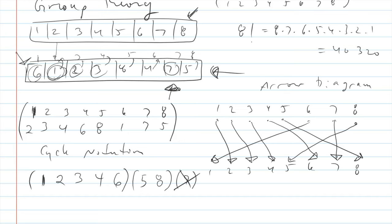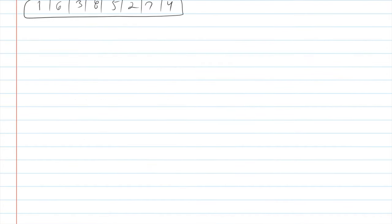We're not done yet because some numbers haven't been accounted for. Find the lowest number not yet used that isn't in its original position — that's 5. Start a second cycle: 5 is in position 8, so write 8. Then 8 is in position 5 — back to the start of that cycle, so close parentheses. The only remaining number is 7, which doesn't move at all, and we usually don't even write that. So the full cycle notation is (1 2 3 4 6)(5 8) — the most efficient way to describe this permutation.